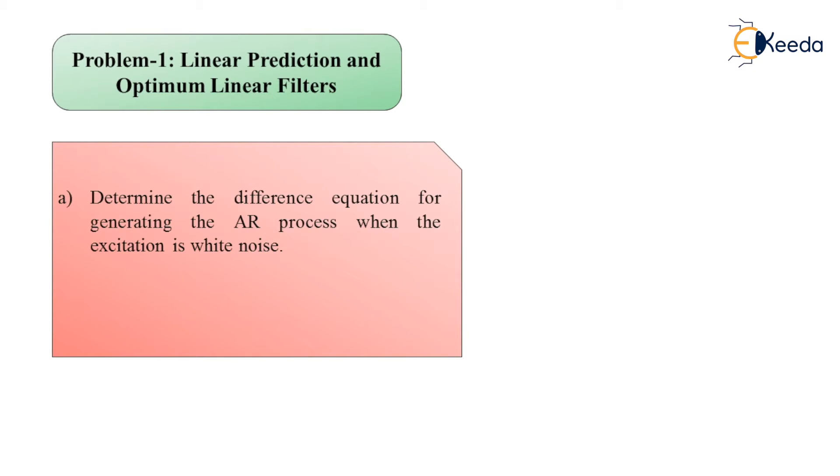So here we have the first part. In the first part, we are asked to determine the difference equation for generating the AR process when the excitation is white noise. See here the condition is put up to determine the difference equation for generating the AR process. Whereas in part B, we are asked to determine the system function for the whitening filter. So this is the complete problem statement. Now we shall focus on finding solution to part A.